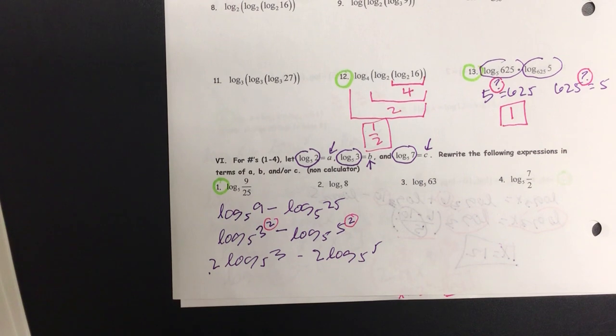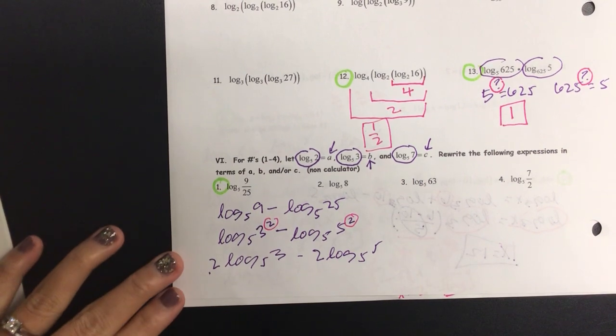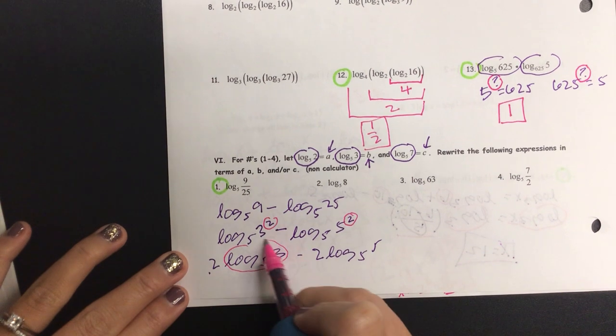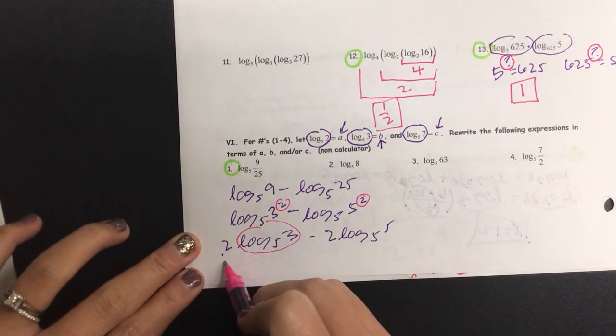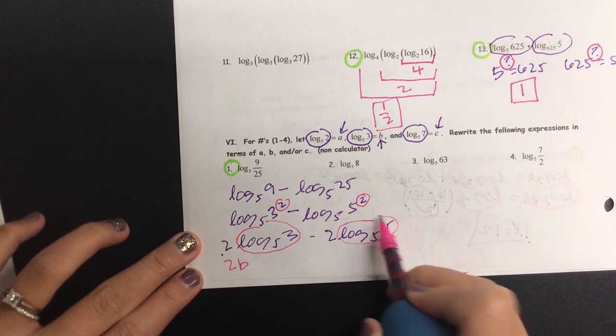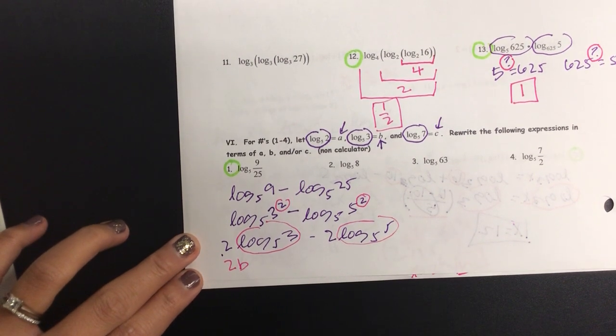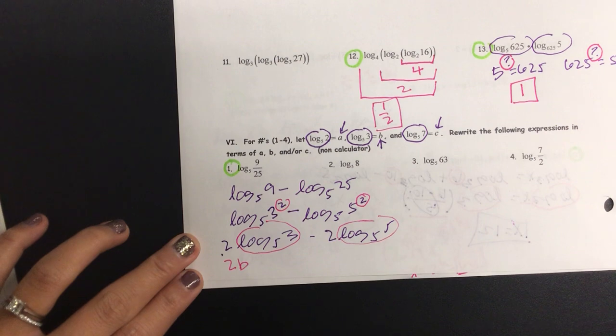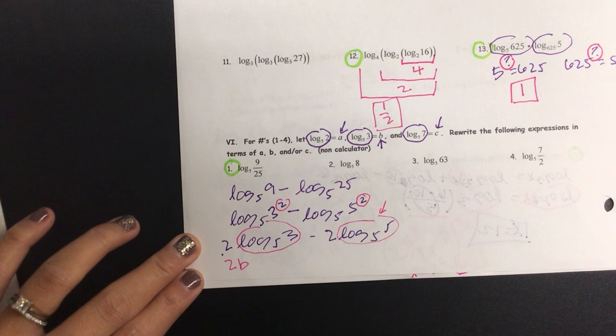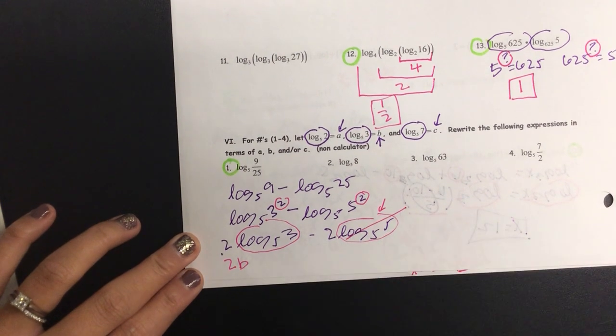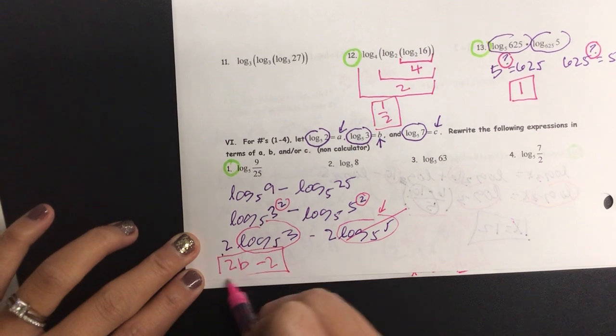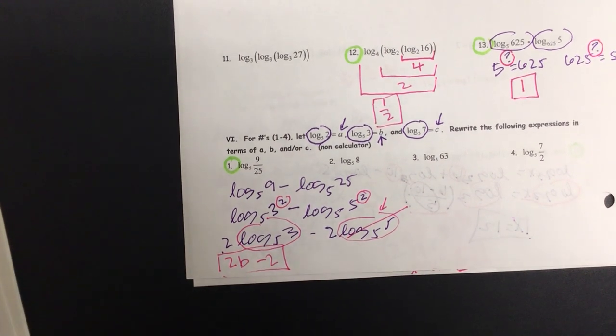Are there some that we already have? Do I have log base 5 of 3 already? Yes. What letter is going to represent that? So, 2B. Do I have a letter to represent log base 5 of 5? No. But what is that? Log base 5 of 5 is what? Little number, big number. That's 1. It's gone. So, minus 2. And we're done.